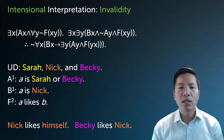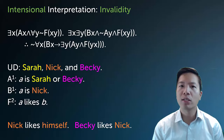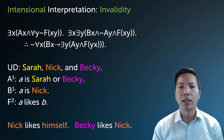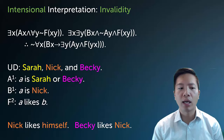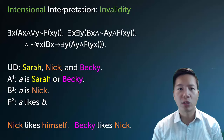Here is an example of an intentional interpretation that captures that this argument is invalid. The universe of discourse isn't infinite — it's only three things: Sarah, Nick, and Becky. A picks out Sarah or Becky, B picks out Nick, and F2 is the relation 'A likes B.' Now the only way that this is actually invalid is if it's the case that Nick likes himself, Becky likes Nick, and no one else likes anyone else. So that means Sarah likes no one, no one likes Sarah, Becky doesn't even like herself, and so on.